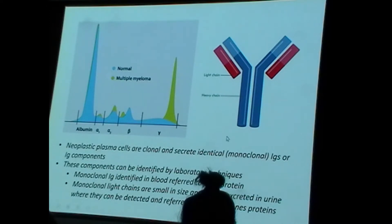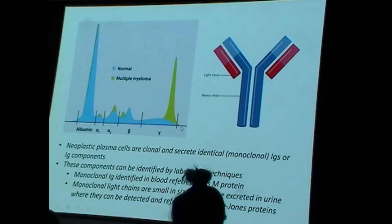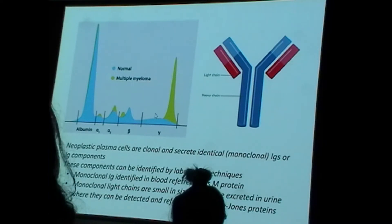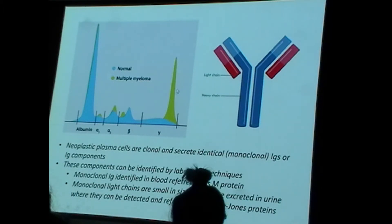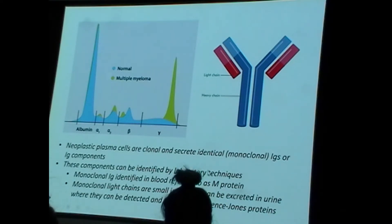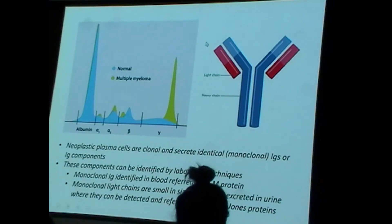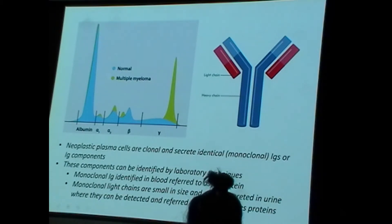This is known as an M-spike — M for monoclonal. This is seen on serum protein electrophoresis, which assesses all the proteins of the blood: albumin, alpha and beta globulins, and gamma globulins. Immunoglobulins are gamma globulins. In normal blood, gamma globulin distribution is broad — many different kinds. But in a plasma cell cancer, one specific immunoglobulin far and away outshines the rest. This monoclonal spike is due to the M-protein — the single monoclonal immunoglobulin produced by the plasma cell cancer. The light chains can also be excreted in the urine and are called Bence-Jones proteins.